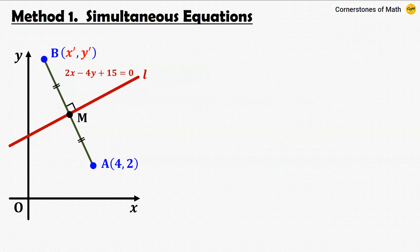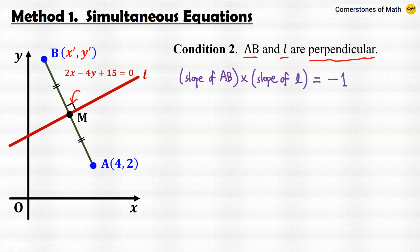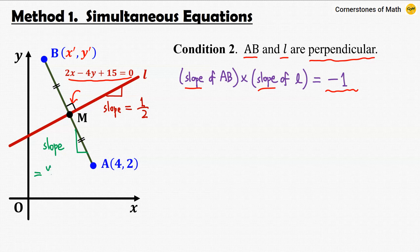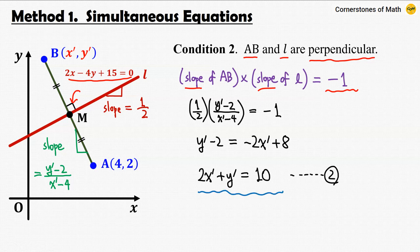Now we need the second equation. The second condition, also from symmetry, is that lines AB and L are perpendicular. This means the product of their slopes is minus 1. From the equation of L, the slope of line L is 1/2, and the slope of line AB is (y-prime minus 2)/(x-prime minus 4). Therefore, (1/2) times (y-prime minus 2)/(x-prime minus 4) equals minus 1, which gives y-prime minus 2 equals minus 2x-prime plus 8, so 2x-prime plus y-prime equals 10.